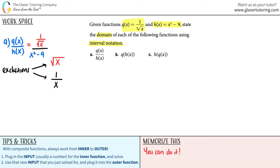If you have a square root, any number under the square root has to be greater than or equal to zero. However, when you're working with a denominator, the x as a whole just cannot be equal to zero. It could be negative, it could be positive — it just cannot be equal to zero. So just know the difference here.